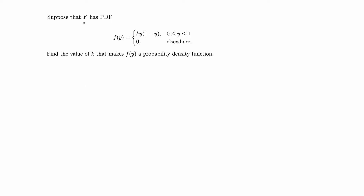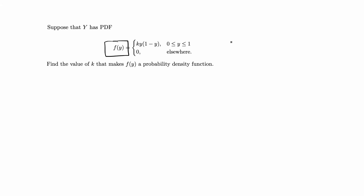Hey guys, in this video I'm going to do this statistics and probability problem. It says suppose that y has a pdf defined as ky times (1 minus y) from 0 to 1, and 0 elsewhere. Then it says find the value of k that makes f of y a probability density function. So we're given a function and we want to determine what constant k will make this function f of y a pdf.